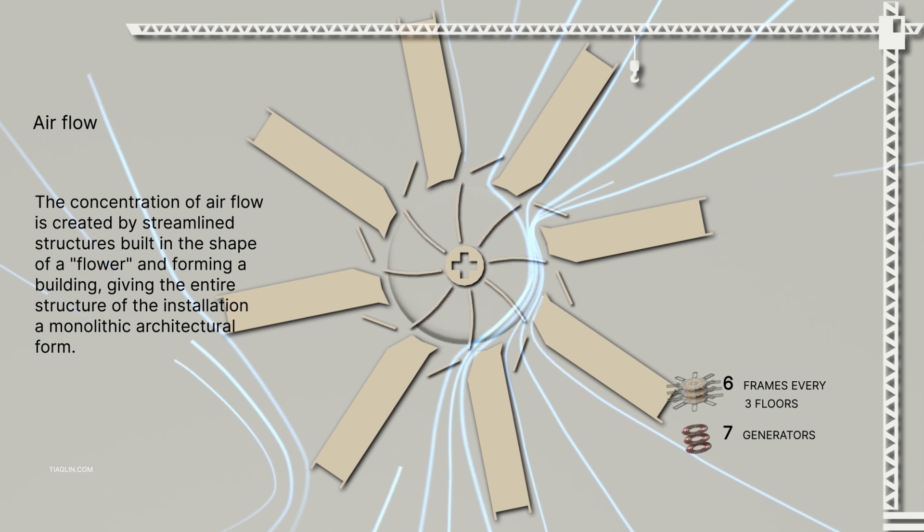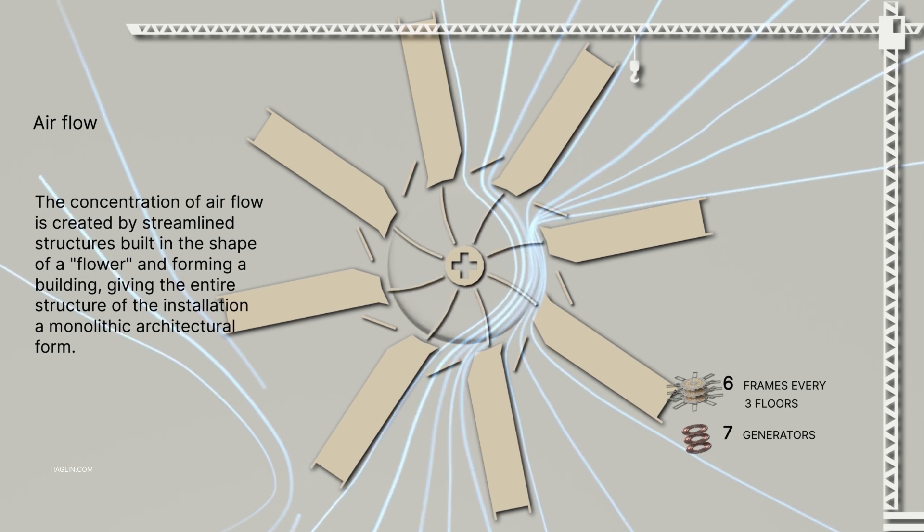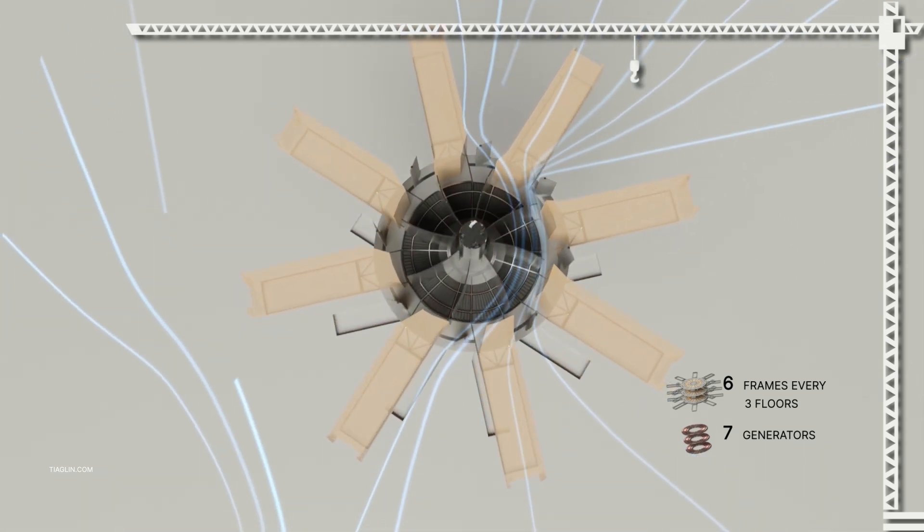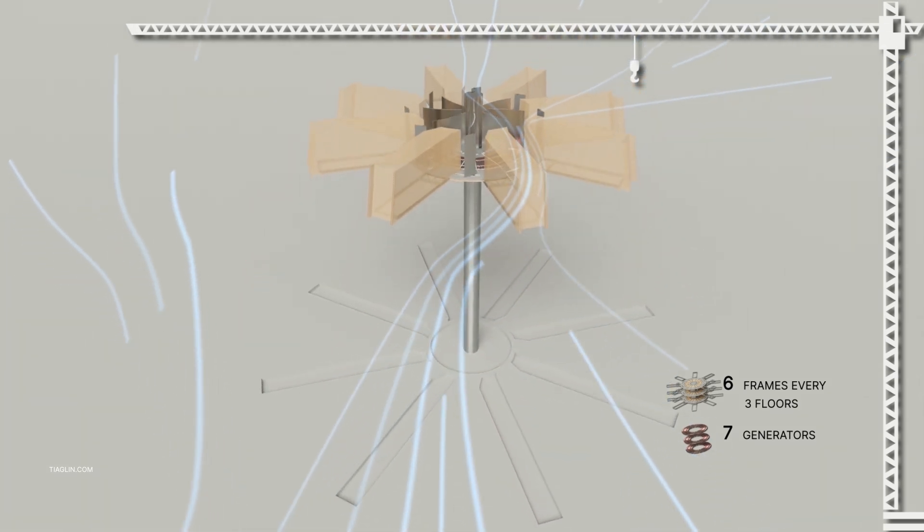The concentration of airflow is created by streamlined structures lined in the shape of a flower, which form a building, giving the whole structure of the installation a monolithic architectural form.